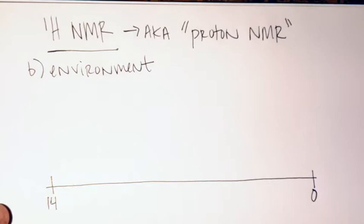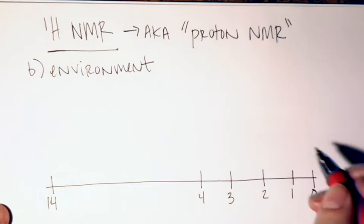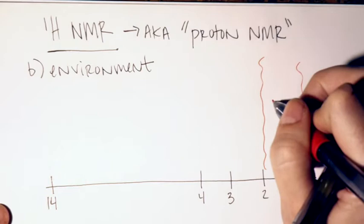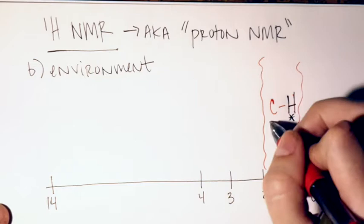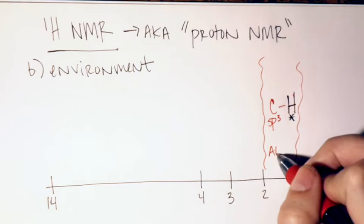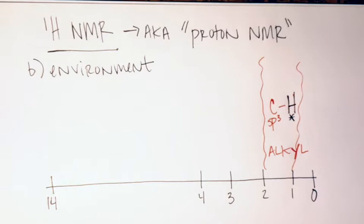Starting in the one to two region: just like with carbon NMR, the most upfield position is reserved for the alkyl region. So one to two is the alkyl region — we're talking about the hydrogen itself, attached to some sort of regular SP3 carbon. Regular SP3 carbons are down in the alkyl region in the carbon-13 spectra, and H's attached to those carbons are down here in the one-to-two region.